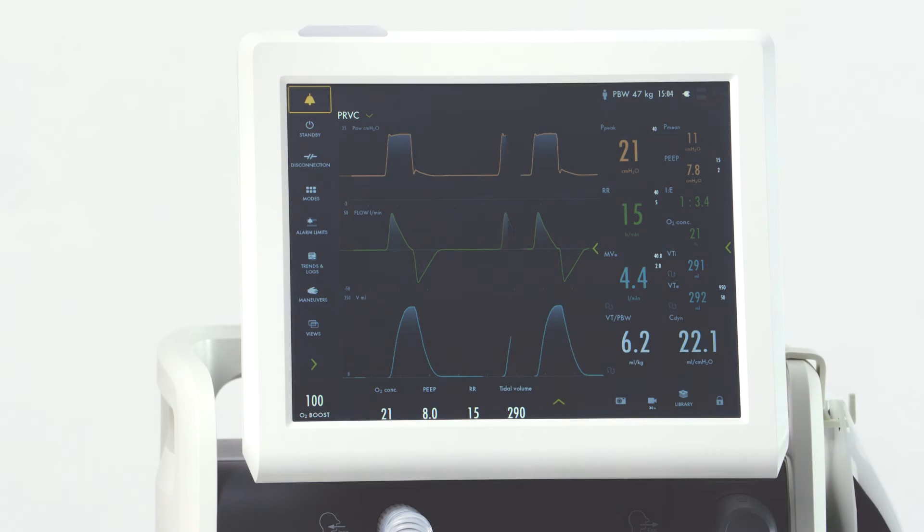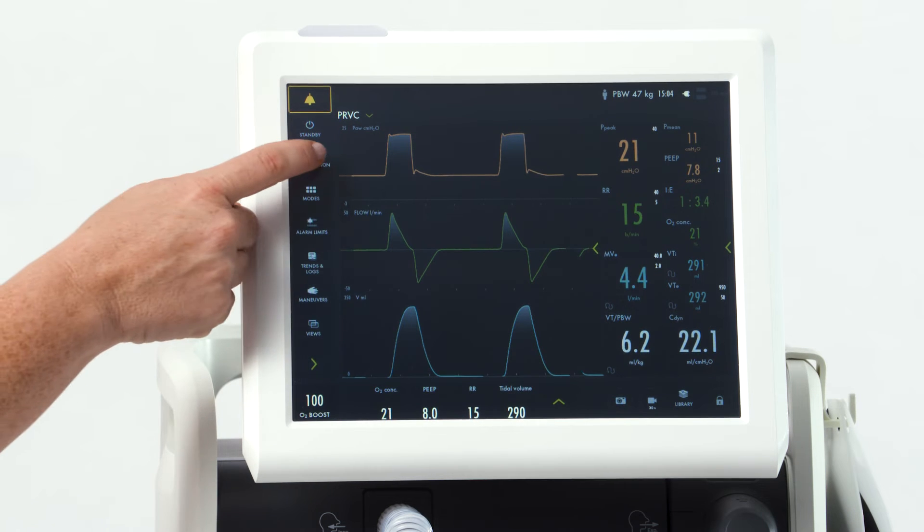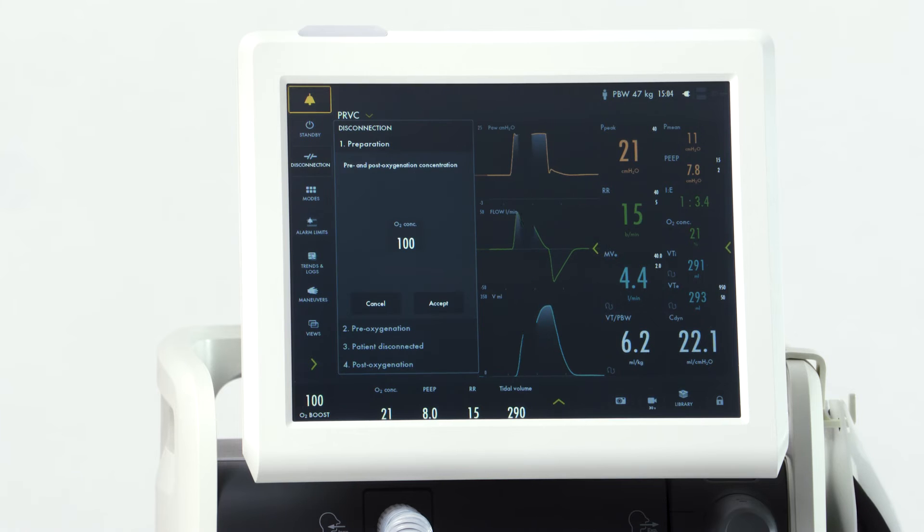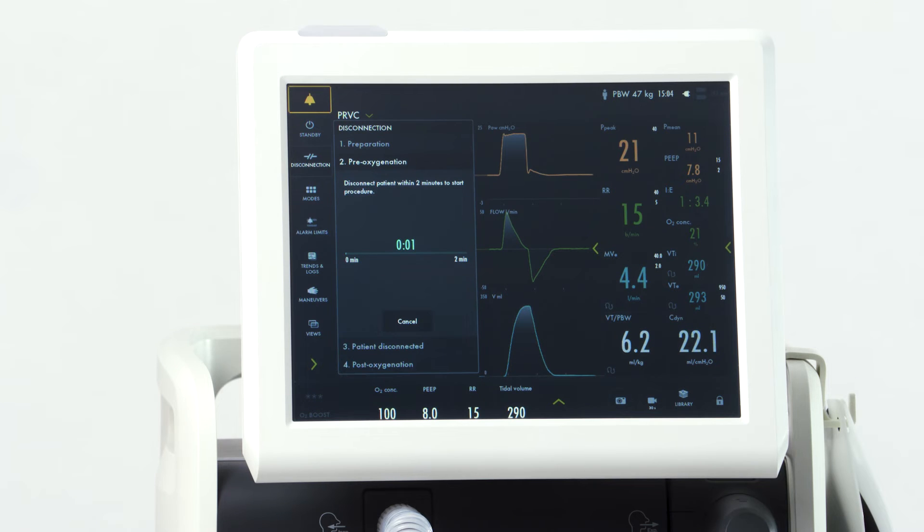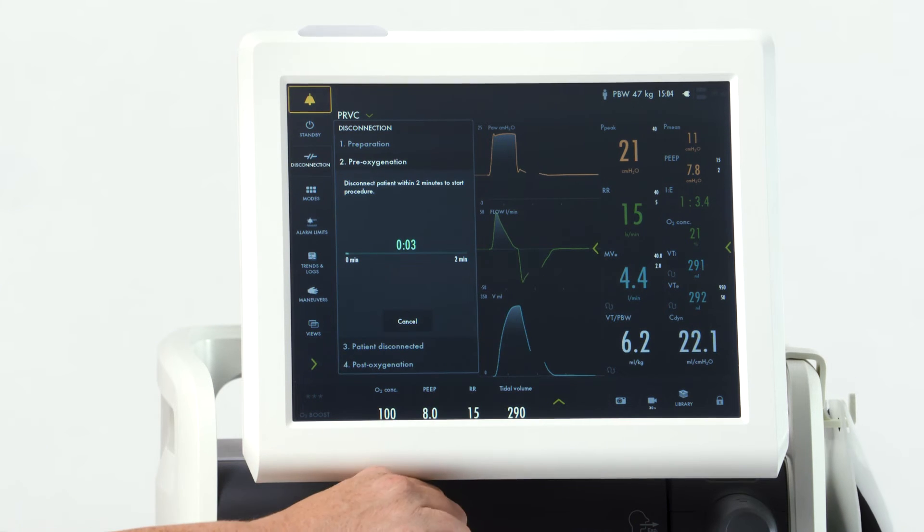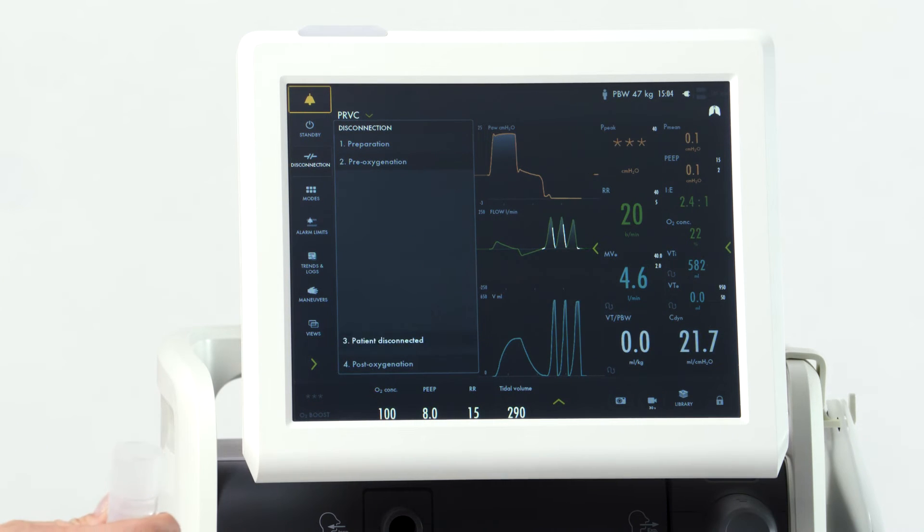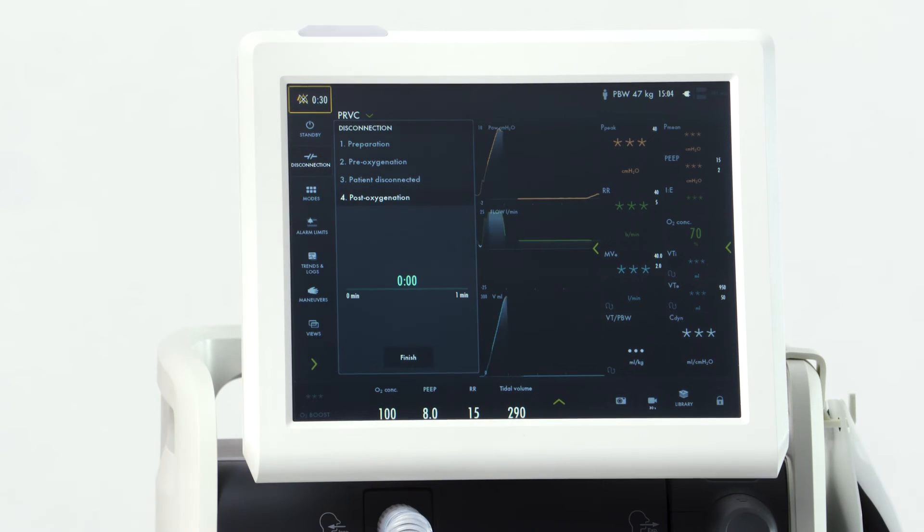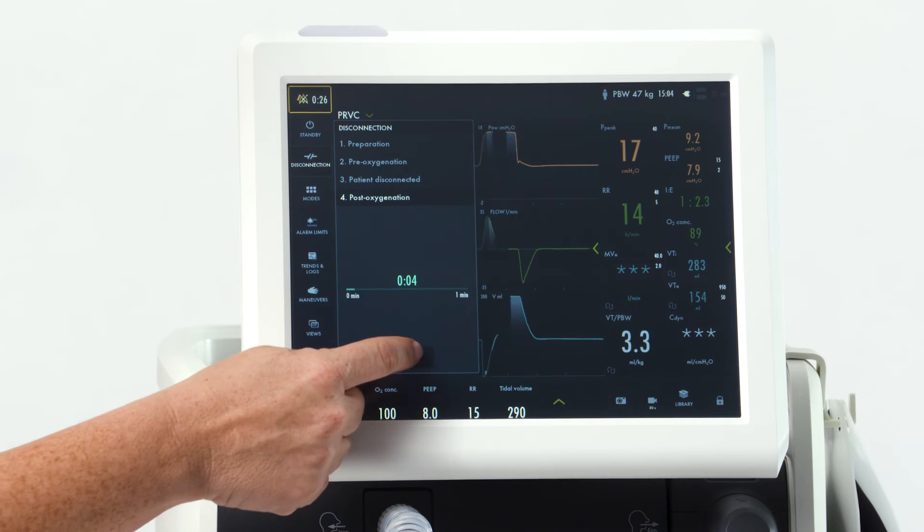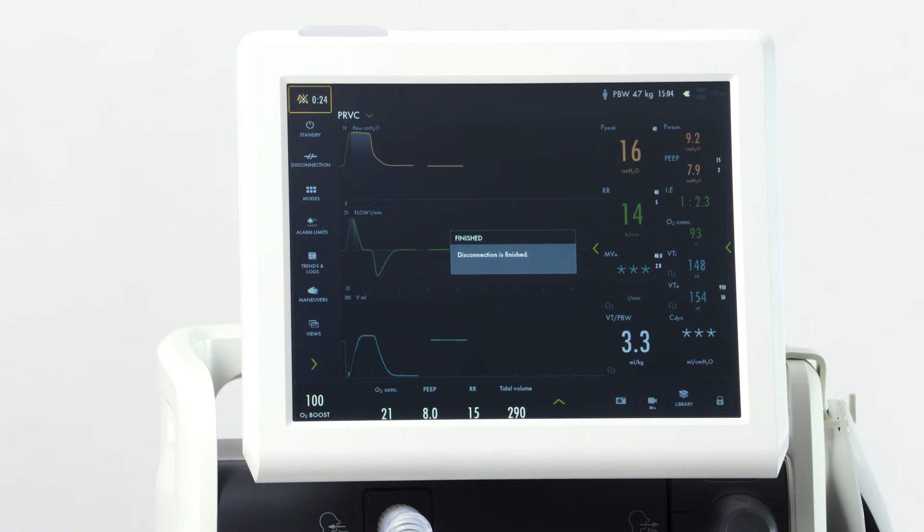When disconnection is needed, simply touch disconnect. It will pre-oxygenate for 2 minutes at that FiO2. Hit accept. Once the patient is disconnected, ventilation will pause, allowing you to disconnect them. Once you reconnect, ventilation will resume and post-oxygenate. Remember, this is not to be used with closed suction.